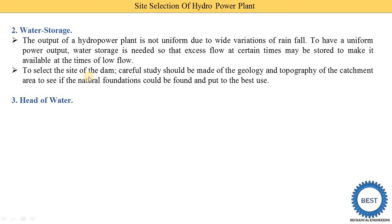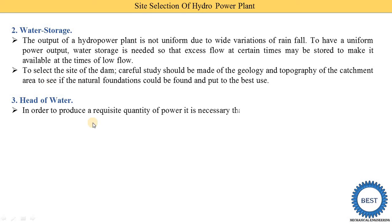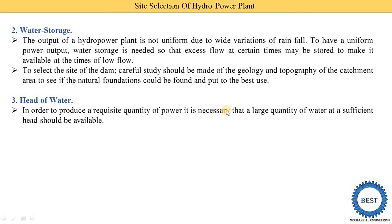Third point is the head of water — if water is stored, then up to which height is this water stored. In order to produce a requisite quantity of power, it is necessary that a large quantity of water at sufficient head shall be available. The power output of the plant depends on two main factors: Q and H. If a higher head is available, then higher power is produced; if a lower head is available, then lower power is produced.